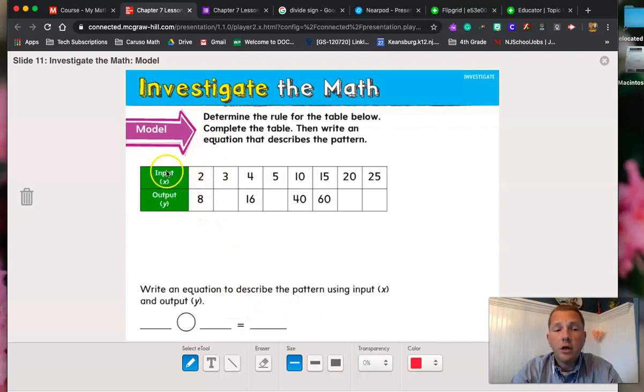Alright, here's our input output chart. Here's our x, here's our input. Here's our y, our output. Now remember, whatever letters that this chart gives you, you have to use in making your equation. Some of you didn't use these letters in your work, so you lost some credit. You got to make sure you can't just make up whatever letters you want.